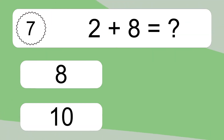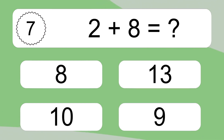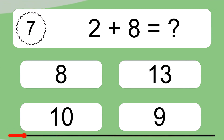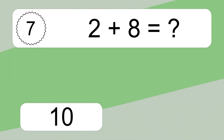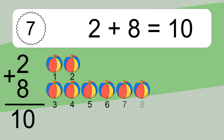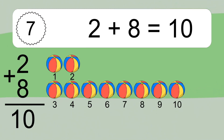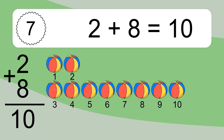2 plus 8 equals what? 2 plus 8 equals 10. Let's count it: 1, 2, 3, 4, 5, 6, 7, 8, 9, 10.